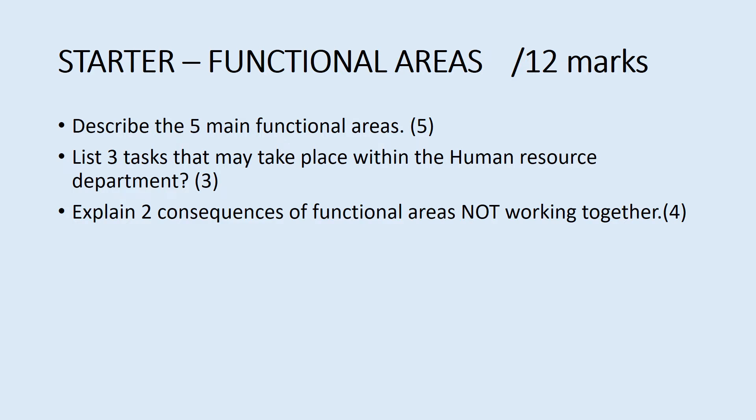Just a little starter activity to test your knowledge from last week on functional areas. It's 12 marks. For the first question, you need to describe the five main functional areas — what those different functions do. Then you need to list in bullet points three tasks that take place within the human resources department. And the third question: explain two consequences of functional areas not working together, for four marks.